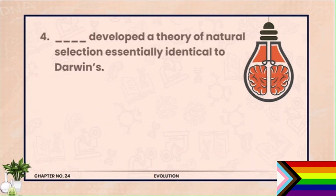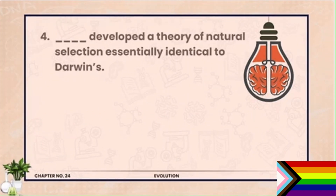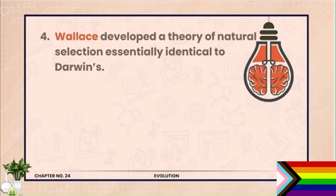Question 4. Wallace developed a theory of natural selection essentially identical to Darwin's. Darwin's ki bilkul identical ki. He is Alfred Wallace.